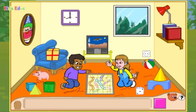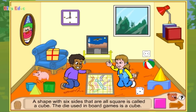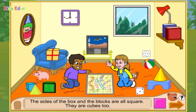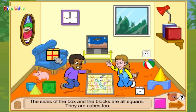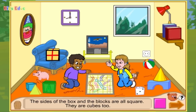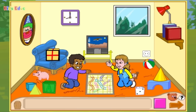You did a great job finding squares. Now let's learn something new about squares. A shape with six sides that are all square is called a cube. The die used in board games is a cube. The sides of the box and the blocks are all square — they are cubes too. This block is a cube; all the sides of this block are square. This box is a cube; all the sides of the box are square. You did a great job learning about squares and cubes.